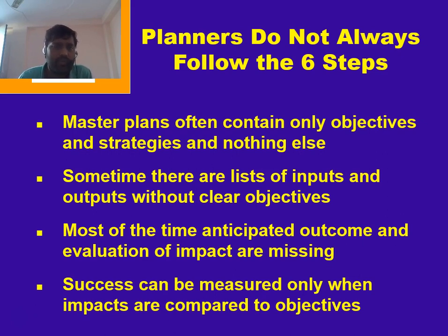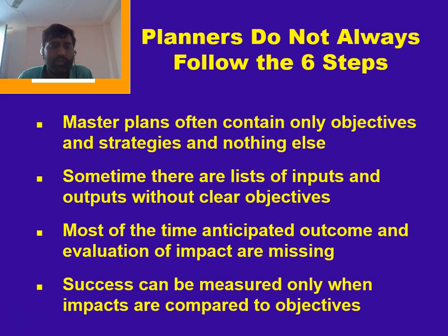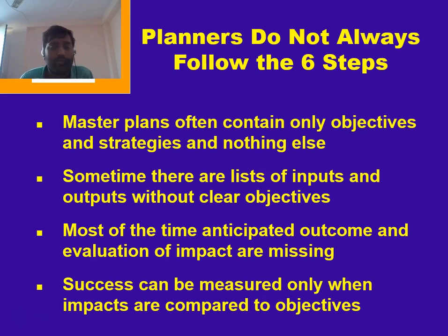Most planning departments in the government sector do not follow these six steps. Master plans often contain only objectives and strategies and nothing else; sometimes there are lists of inputs and outputs without clear objectives. Most of the time, anticipated outcomes and the value of impact are missing. Success can be measured only when impacts are compared to objectives.